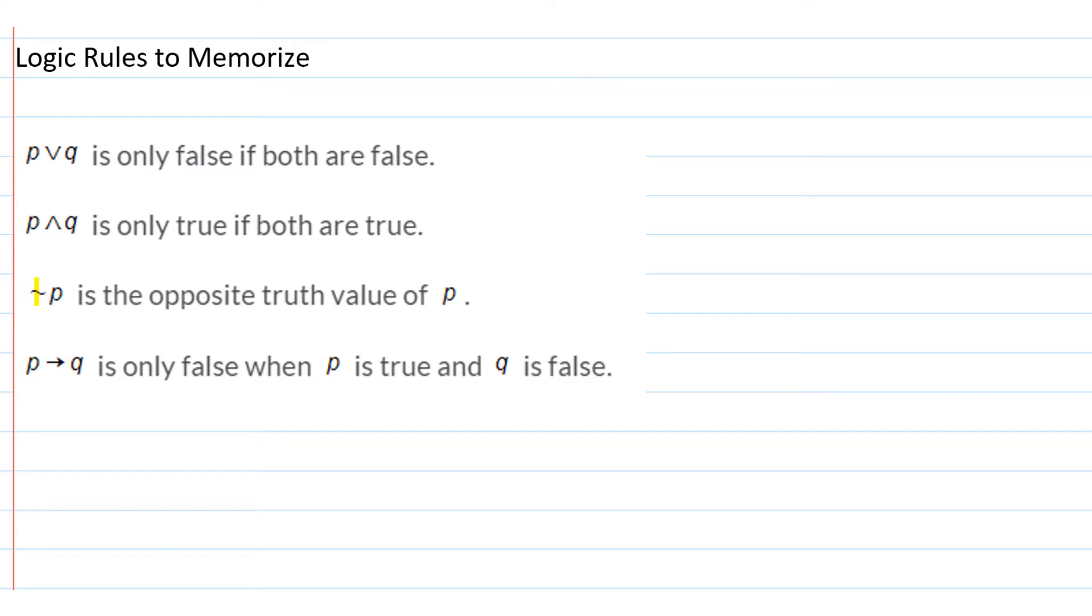And then the last symbol that we need to be familiar with in order to work through these problems is this arrow, which is called the conditional. But the way that we read this is if P then Q. If P then Q is only false when P is true and Q is false.